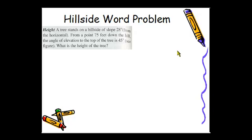If we read the problem, it says a tree stands on a hillside of a slope 28 degrees from the horizontal. From a point 75 feet down the hill, the angle of elevation to the top of the tree is 45 degrees. What is the height of the tree?